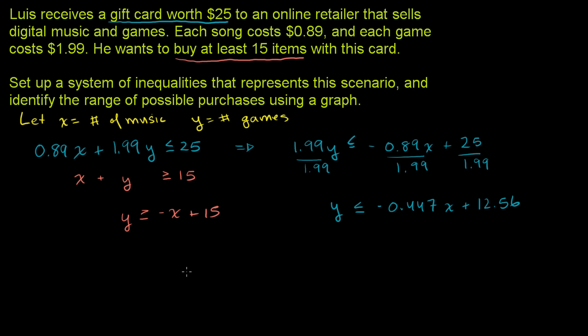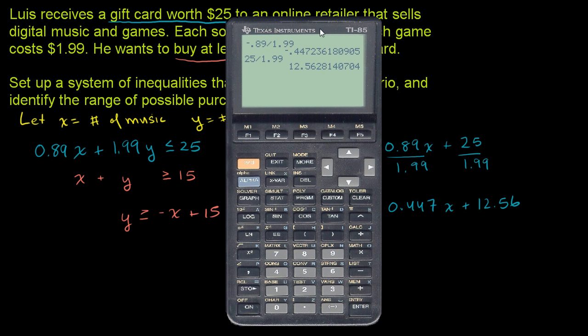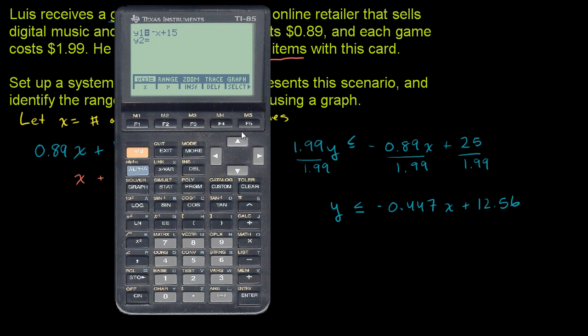Let me get my calculator out. So the first equation is negative x plus 15. Press Enter. The second equation is negative 0.447x plus 12.56. And now we're ready to graph them.